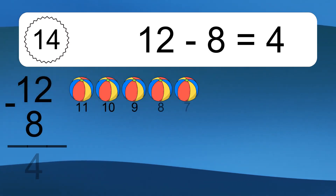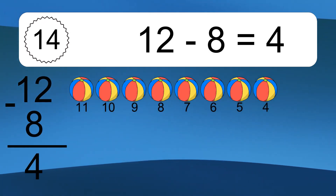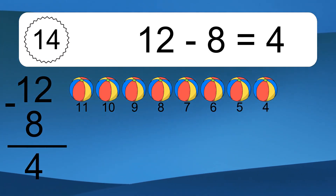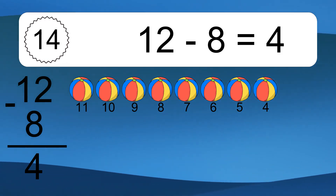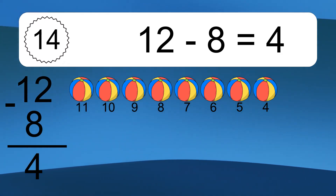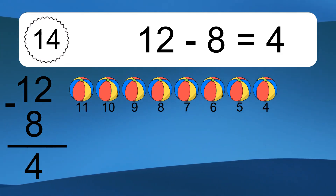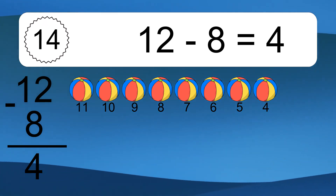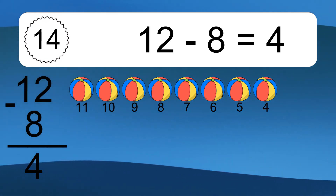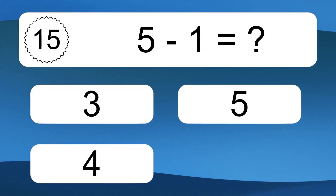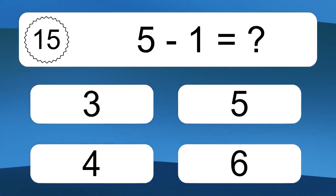12 minus 8 equals what? 12 minus 8 equals 4. Let's count it. 11, 10, 9, 8, 7, 6, 5, 4.